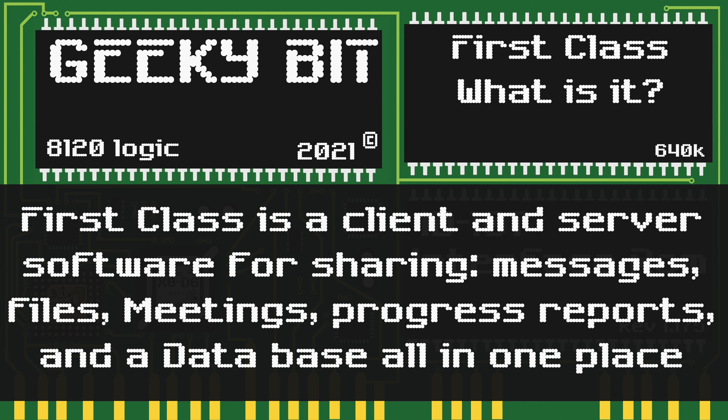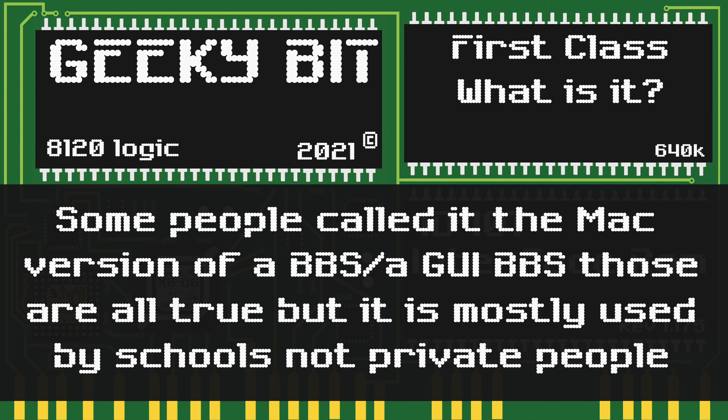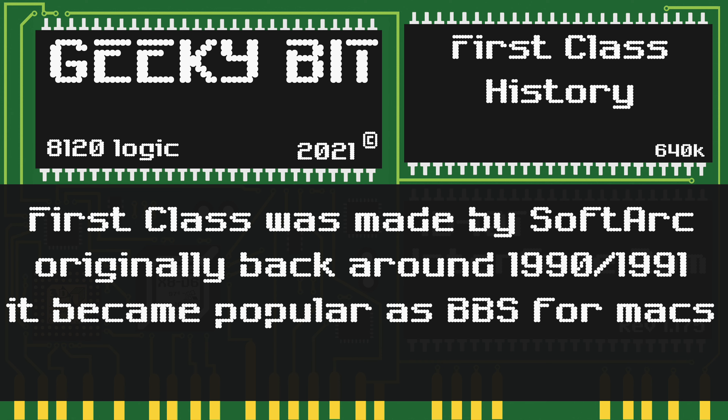So what in the world is First Class? Well, it's a client and server software that allows you to share messages, files, meetings, progress reports, and is a database all in one place. Some people call it the Macintosh version of a BBS, or a GUI BBS. Those are all true, but it is mostly used by schools and not private individuals.